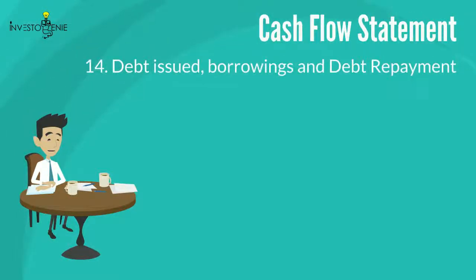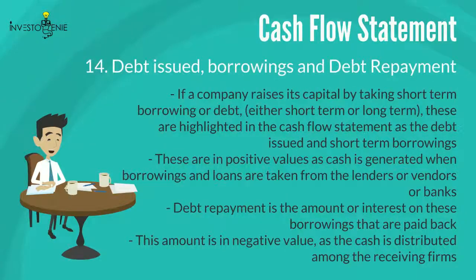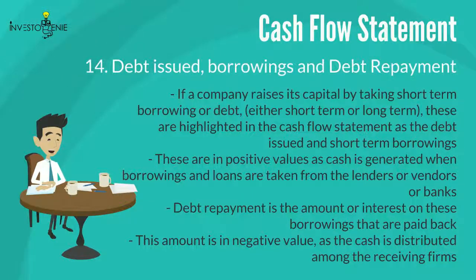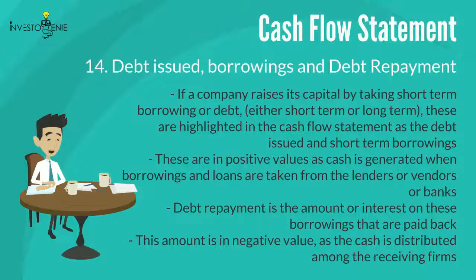Fourteen: debt issued, borrowings, and debt repayment. These values come under the financing activities section of the cash flow statement. If a company raises capital by taking short-term or long-term borrowings or debt, this is highlighted as debt issued or short-term borrowings, shown in positive values since cash is generated when loans are taken. Similarly, debt repayment is the amount or interest paid back on these borrowings, shown as a negative value as cash is distributed to the receiving firms.